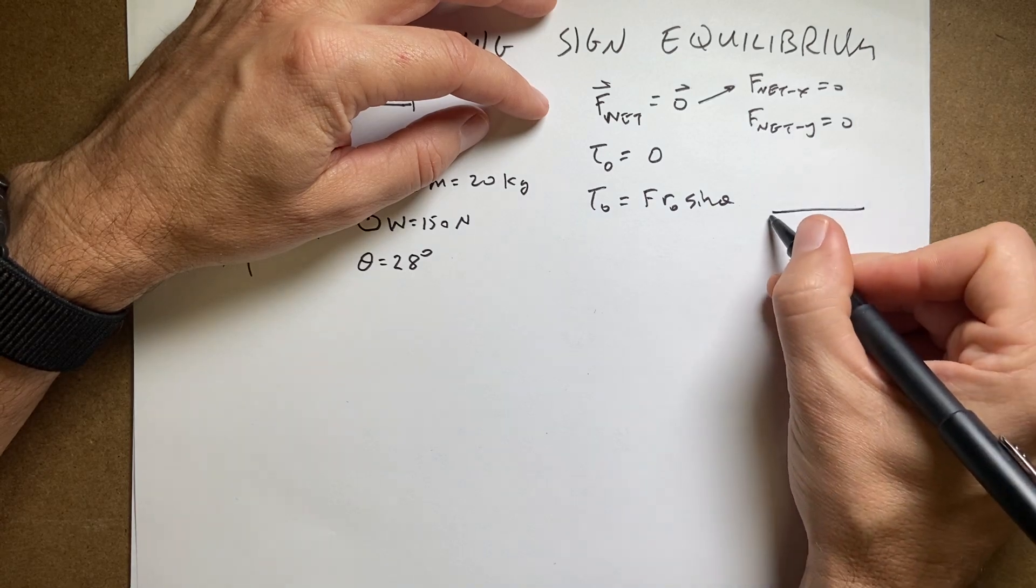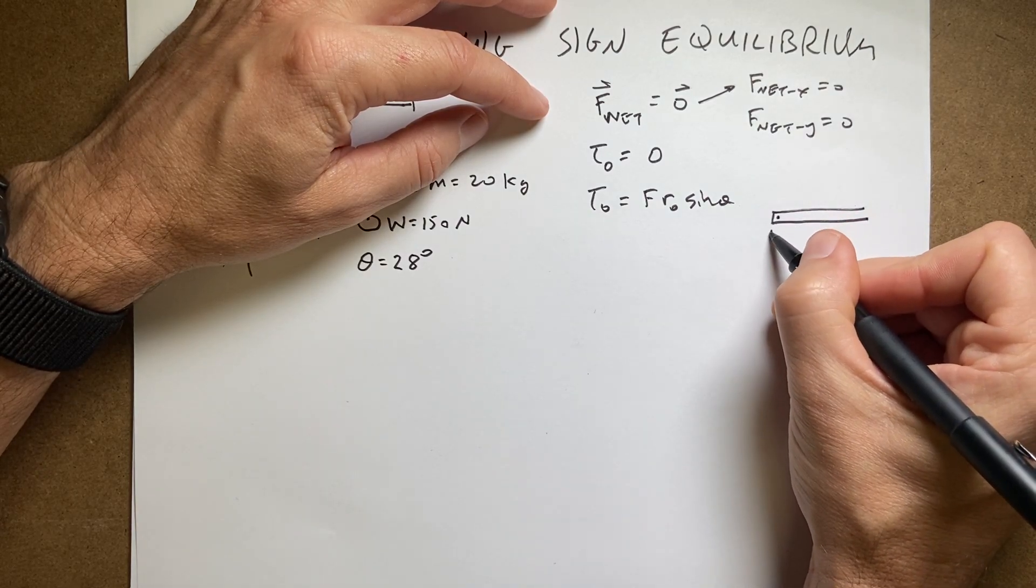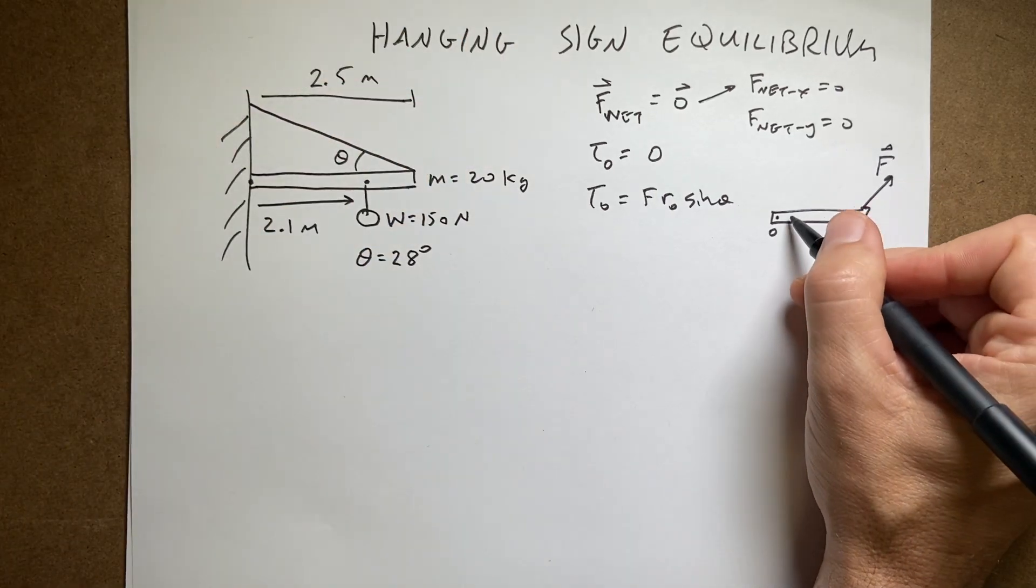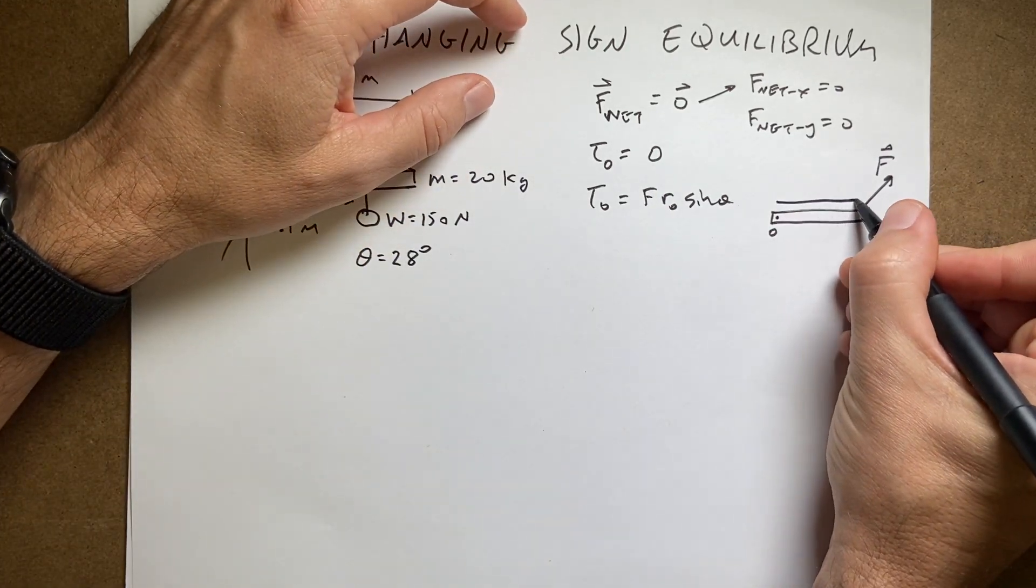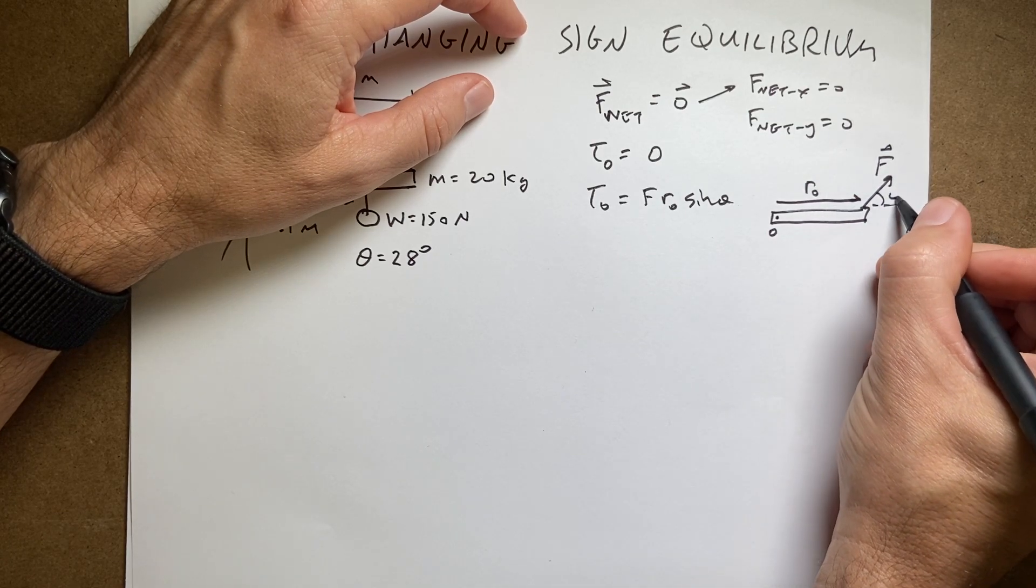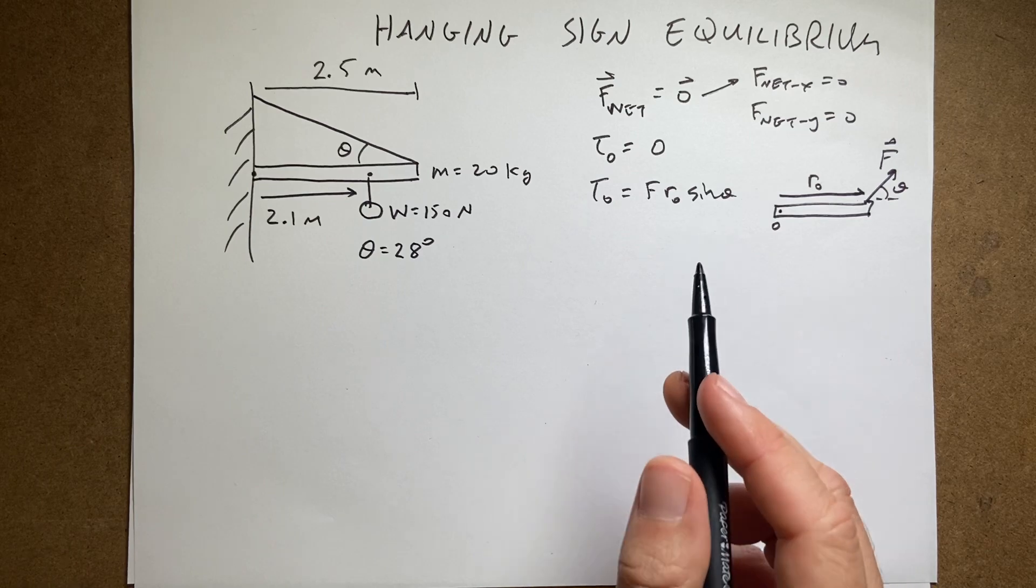So if I have some beam right here, and that's my point O, then I apply a force right here F, then this would be R zero from point zero to the force. And then this is the angle between them for sine of theta.